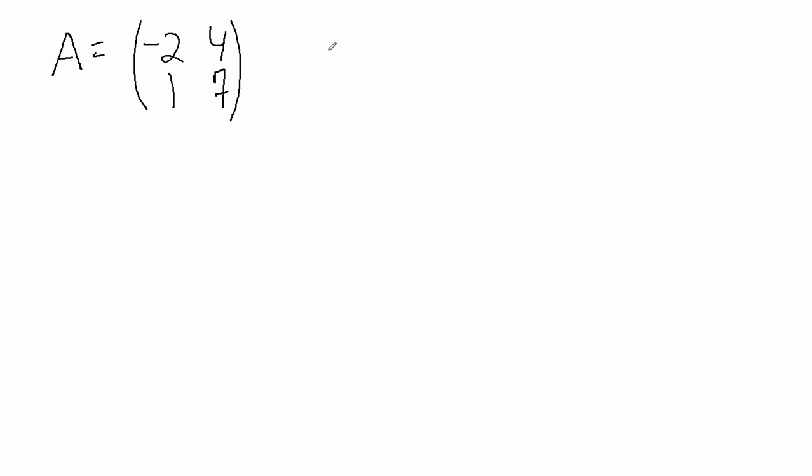Now there are a few different ways to denote the determinant. So one way is to just put A in between these absolute value lines here, or we could also say det and then a parentheses A. So det for determinant.